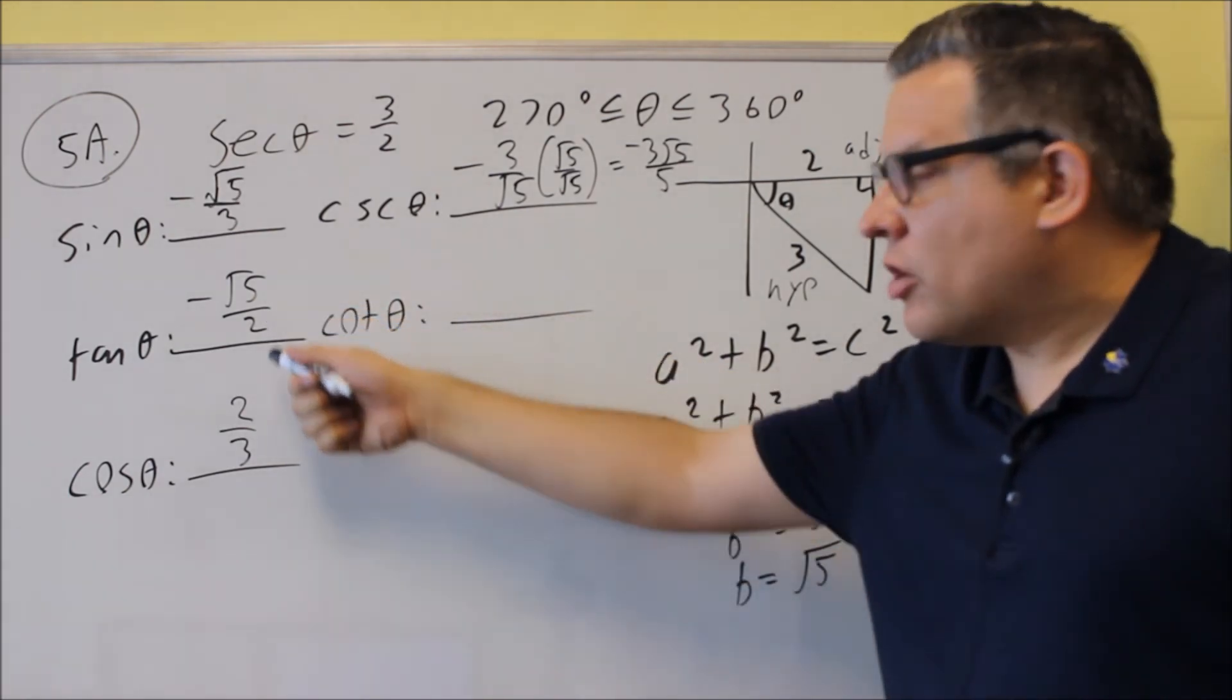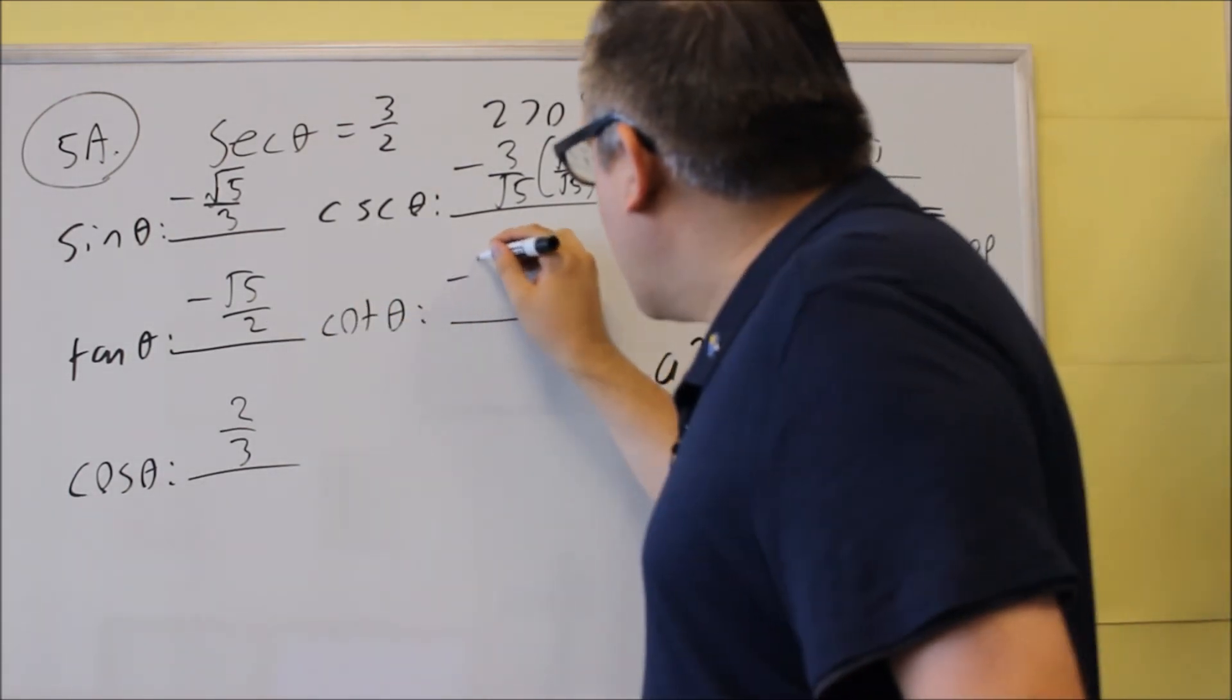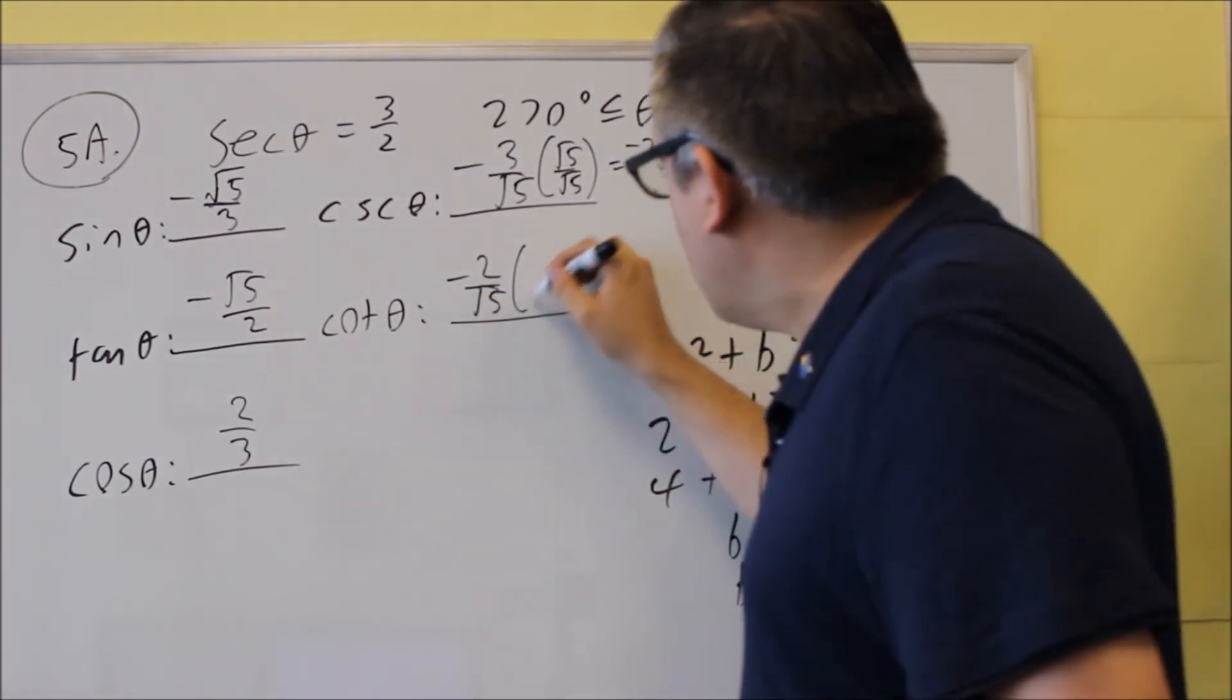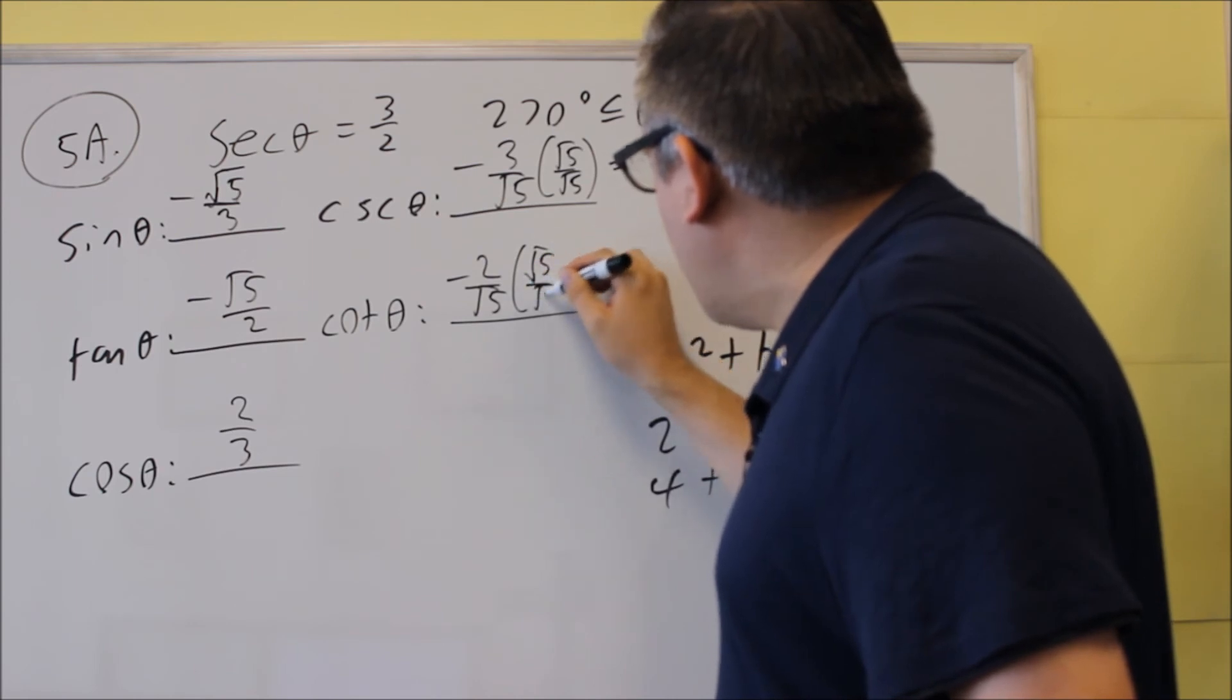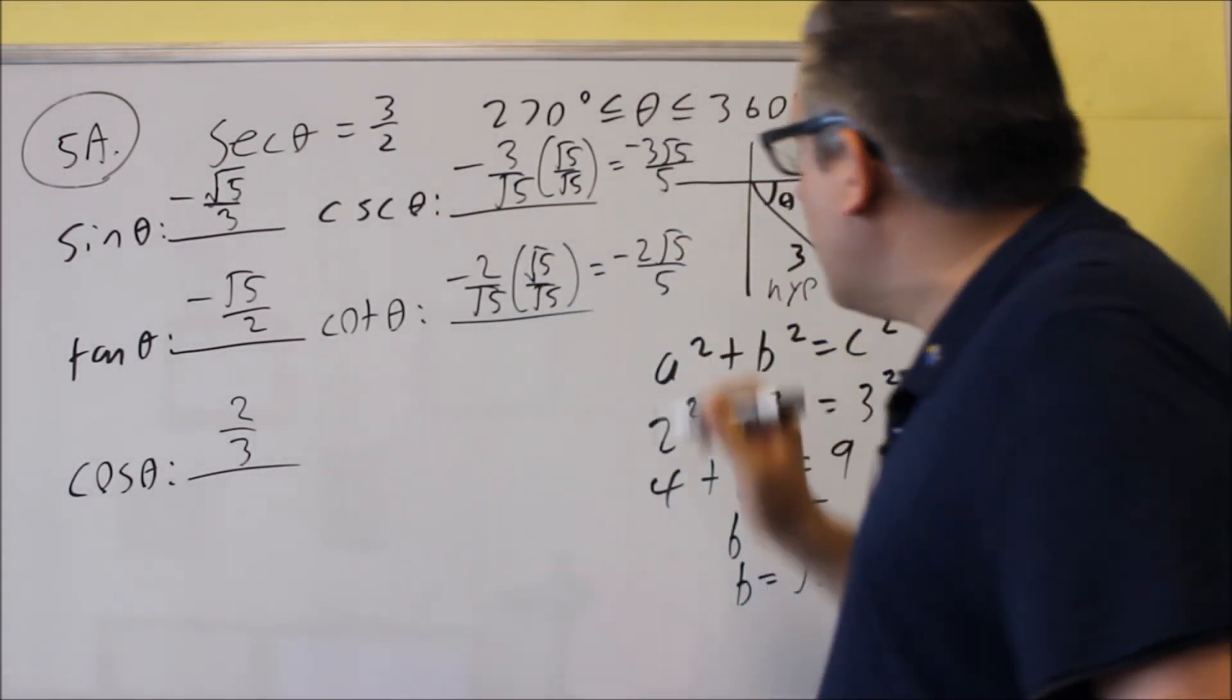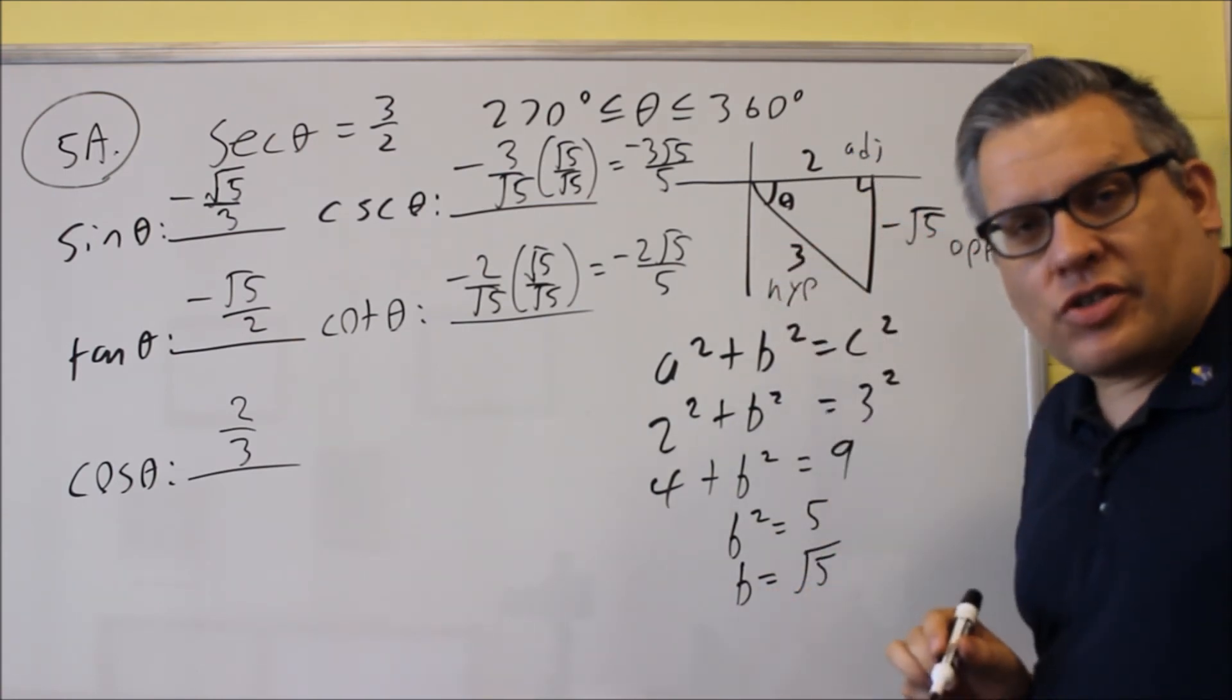Cotangent, we're going to take the reciprocal of tangent. Negative two over square root of five. Once again, you're going to rationalize, multiply it by root five over root five, and you get negative two square root of five over five. And that would be its exact answer.